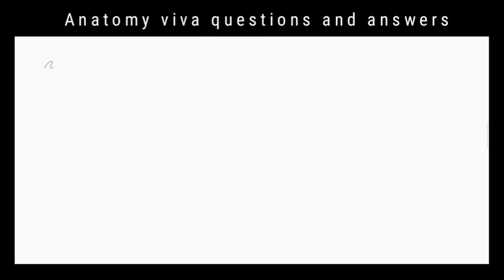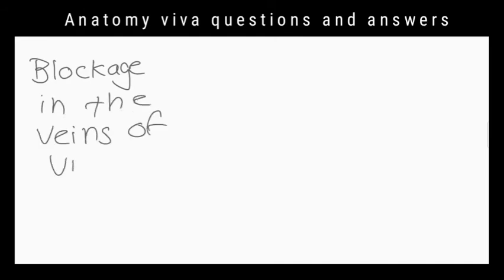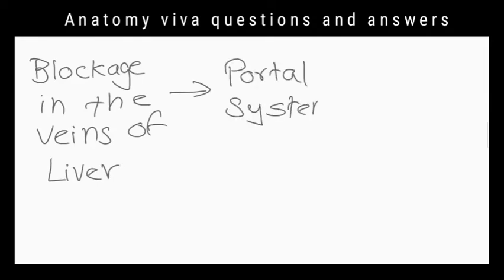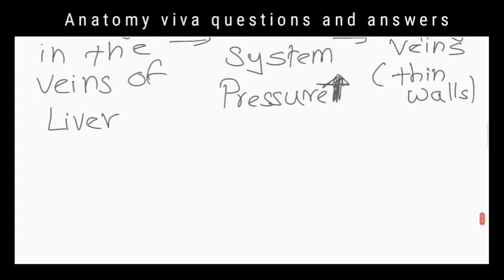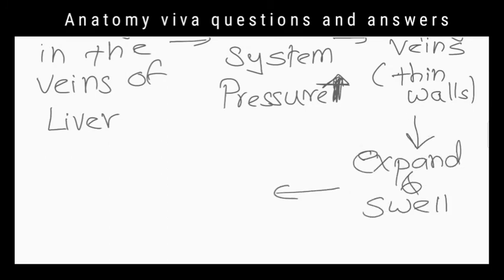What is the clinical importance of that portosystemic anastomosis in portal hypertension? In portal hypertension there is increased blood pressure in the veins of the portal system due to a blockage in the veins of the liver. It pushes blood into esophageal veins which have thin walls. Extra pressure causes them to expand and swell. If the pressure is too high these varices break and bleed. It is an emergency because uncontrolled bleeding can lead to shock and death.